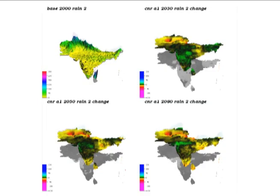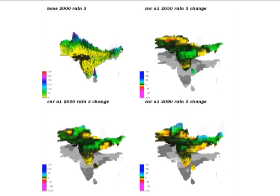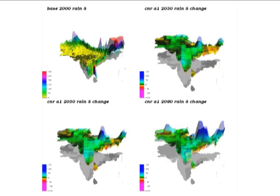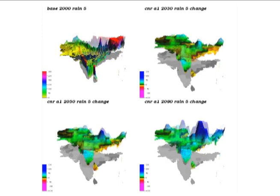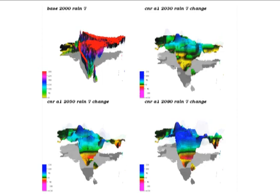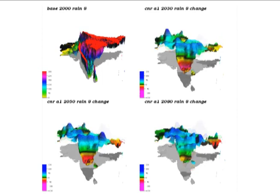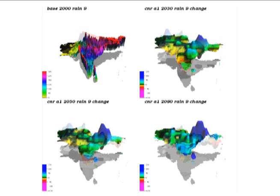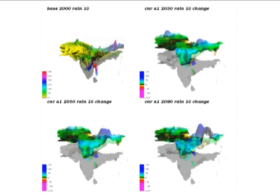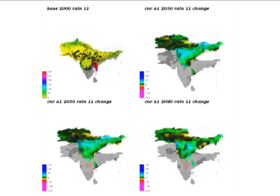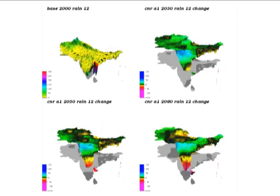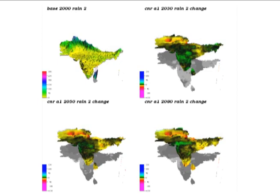What we're looking at here are representations of possible climate futures. We're going to show three different aspects: precipitation, minimum temperature, and maximum temperature. The first graph we'll look at is monthly precipitation.